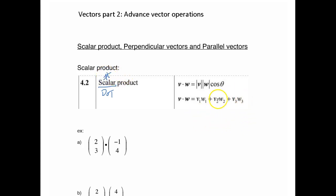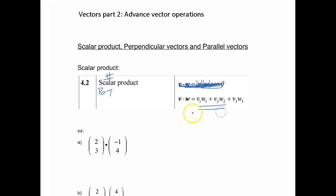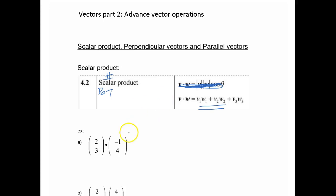There are two formulas here on your formula sheet. This one we never use, so just ignore it. The only one we care about is right there. Notice this only has two coordinate points, but the formula has three corresponding parts. Don't worry about it — if your vector only has two, just ignore the third term. When you have three, which we'll do later, you use it.